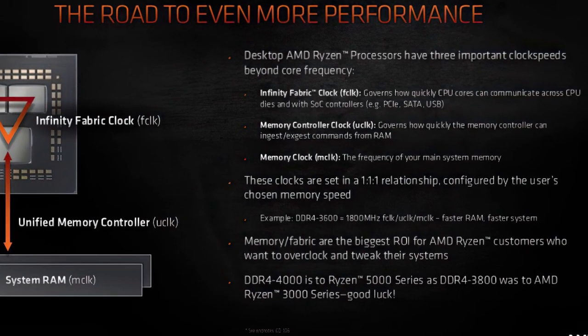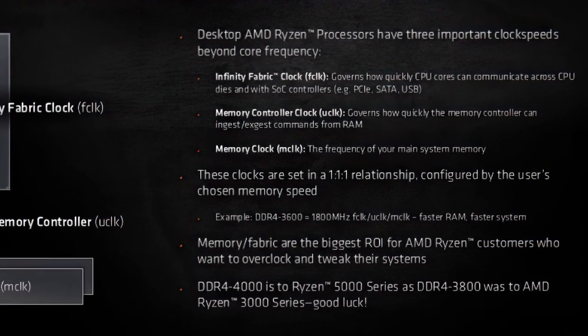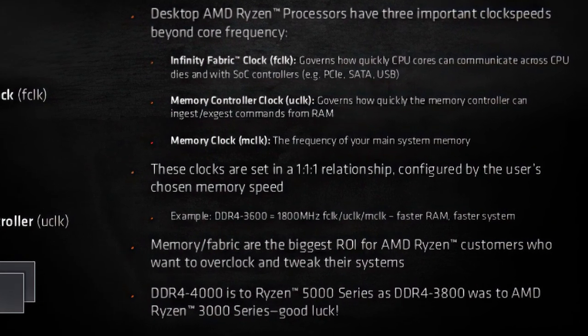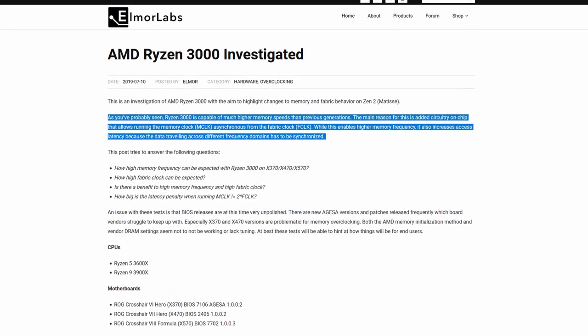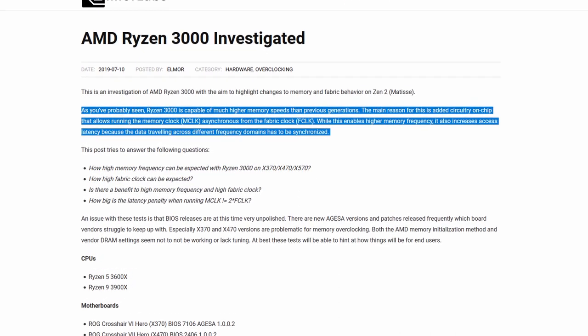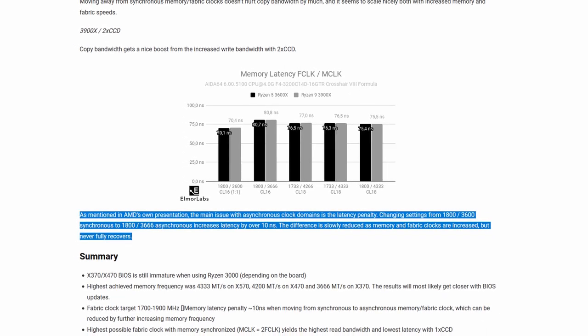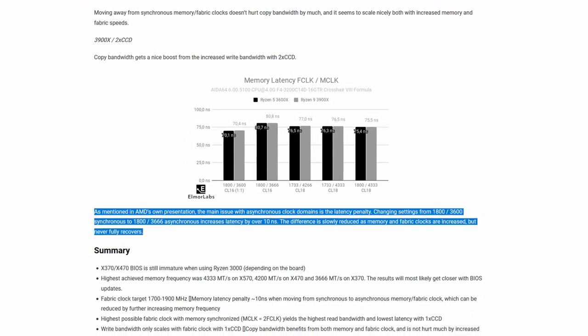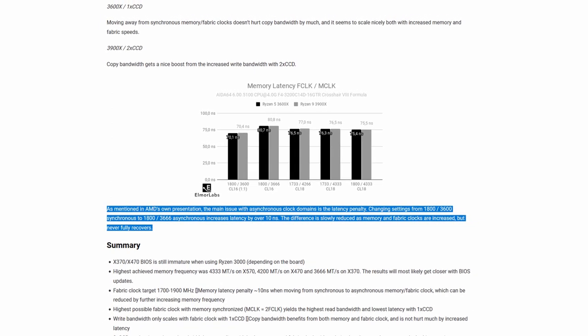By default, the Infinity Fabric, memory controller, and memory frequency will operate in synchronous mode. That means, typically, the CPU will run all the frequencies in a one-to-one ratio. On Ryzen 5000, synchronous mode is supposed to work all the way up to 2000 MHz, after which the system switches to asynchronous mode. In asynchronous mode, the memory controller will operate at half the frequency of the system memory. The fabric clock will also run below the system memory frequency, so you will have a performance penalty. The penalty can be overcome by increasing the memory frequency to well over DDR4-4000 speeds. With all this in mind, let's jump into the benchmarks and the overclocking.